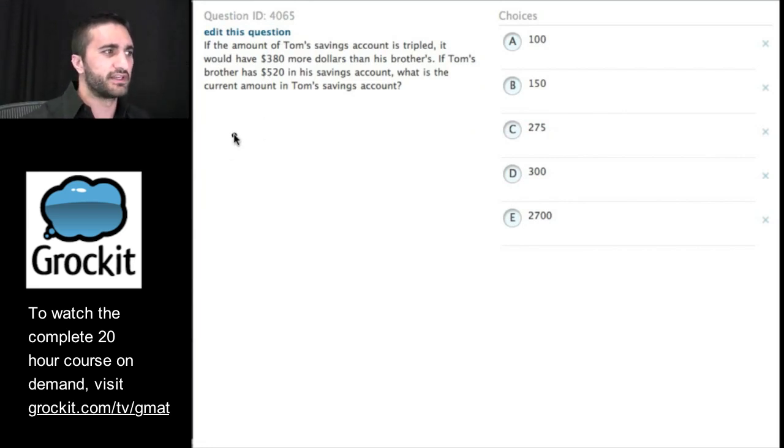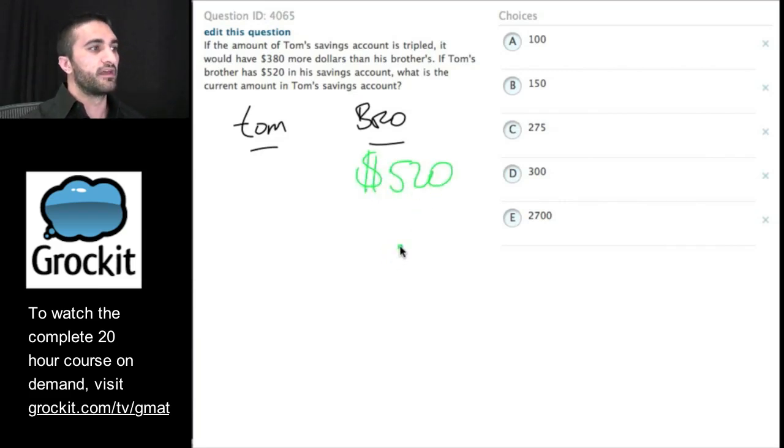Here's a question, take a few seconds to read it, and we'll work this one together. So we have a couple of people, I'm just going to keep myself organized here. If the amount of Tom's savings account is tripled, it would have $380 more than his brother's. I don't know how much he has, but they tell us if Tom's brother has $520 in his savings account, what is the current amount in Tom's? Well, they gave us the rules, so let's just get organized.